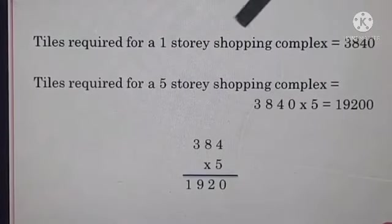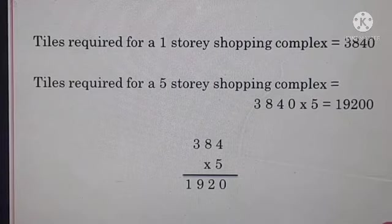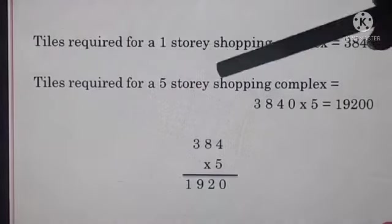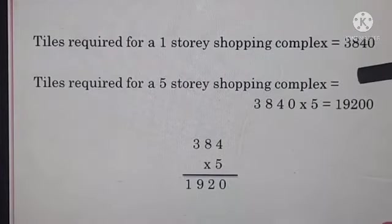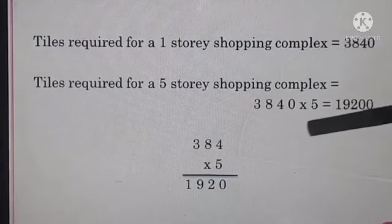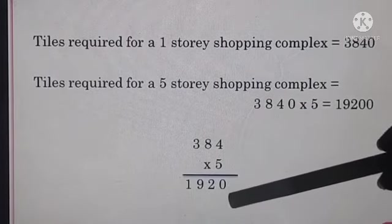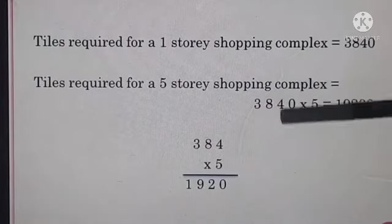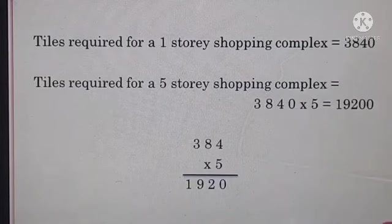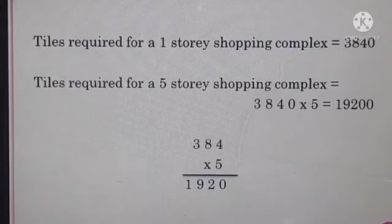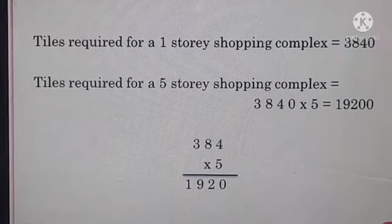Now tiles required for a 1 story shopping complex equals 3,840. Tiles required for a 5 story shopping complex, 3840 multiplied by 5. So 384 multiplied by 5, we got 1,920 and then one 0 will be written to the right side of the product. So how many tiles are required for the entire shopping complex? 19,200. Clear?